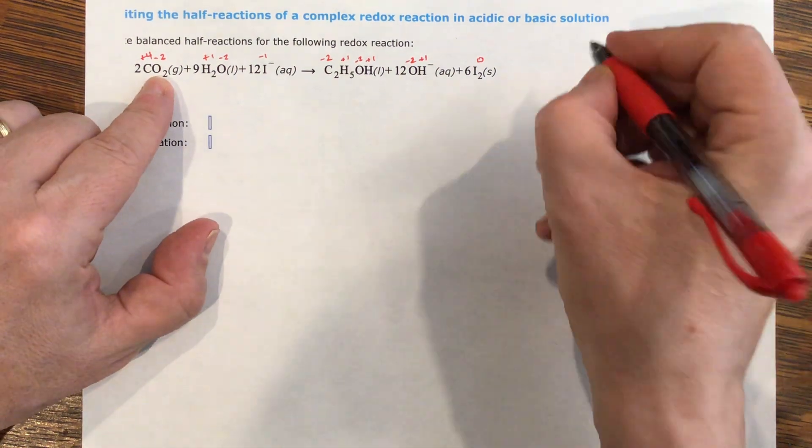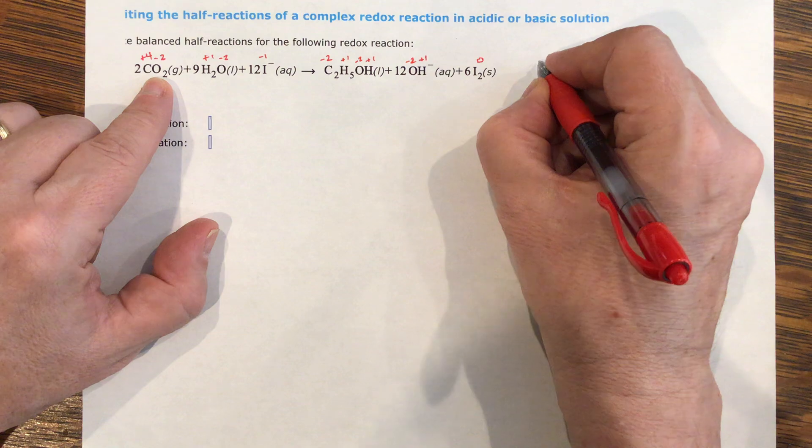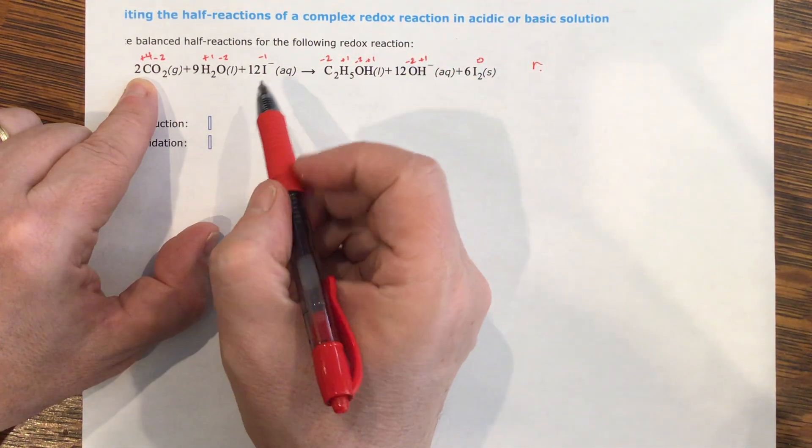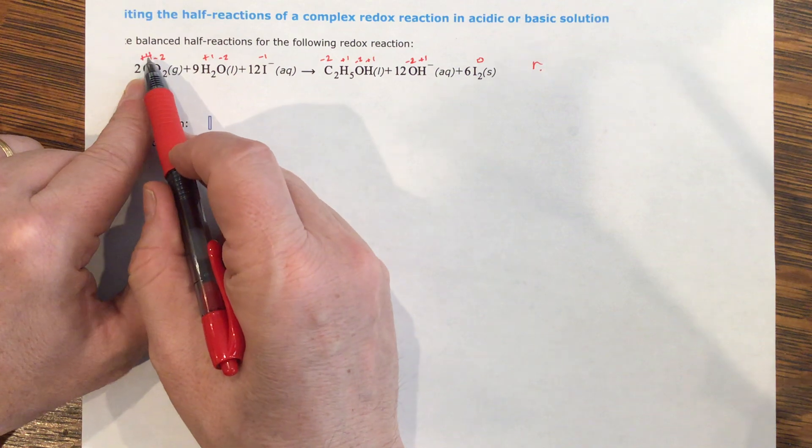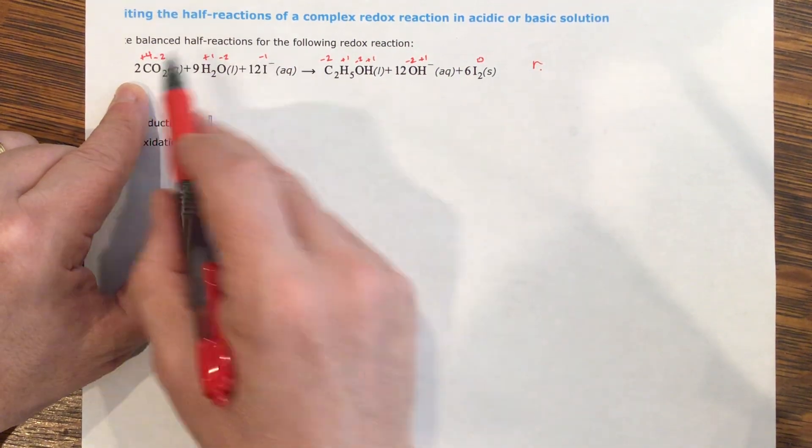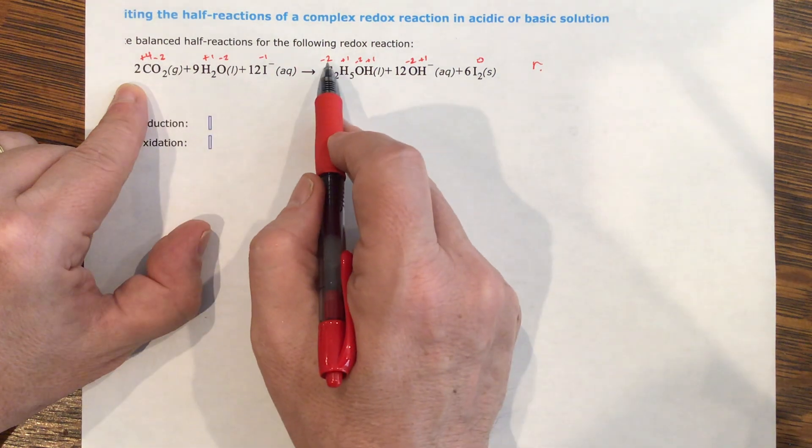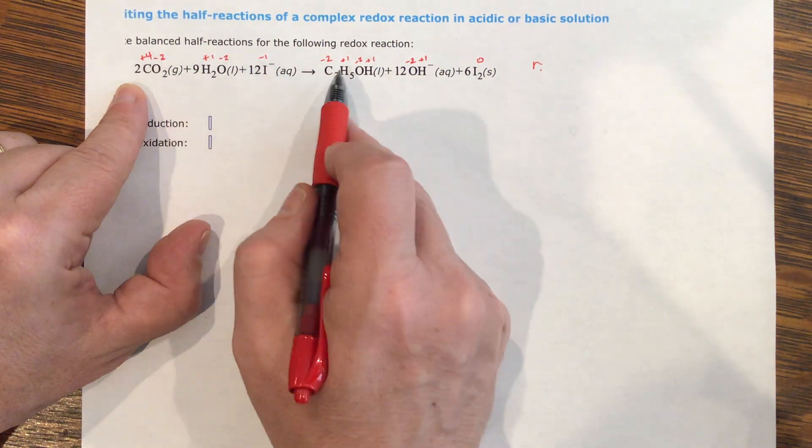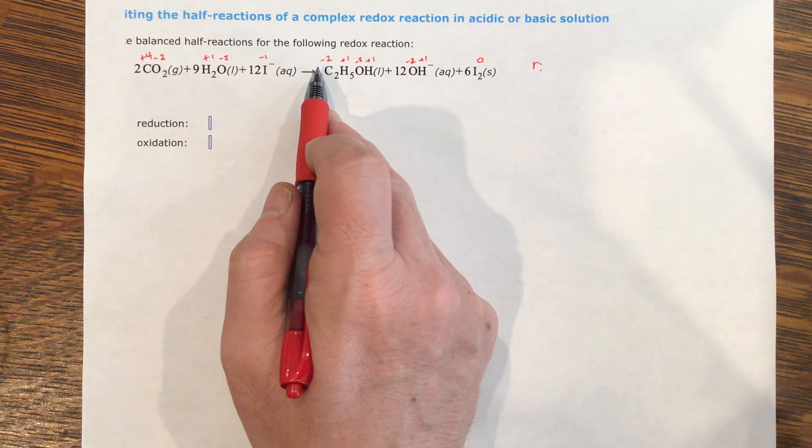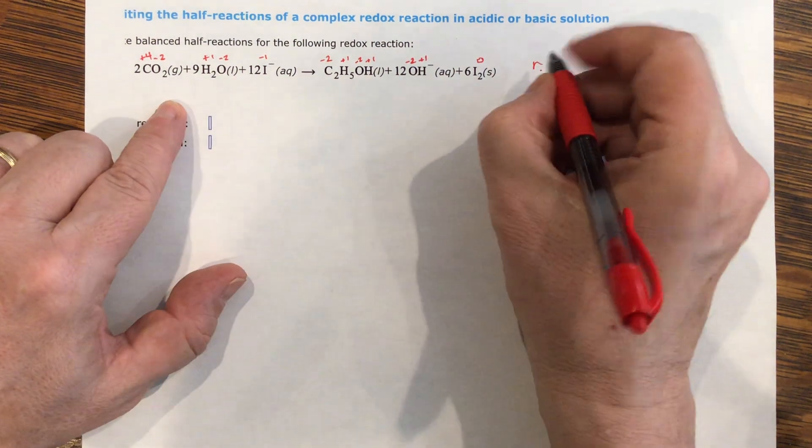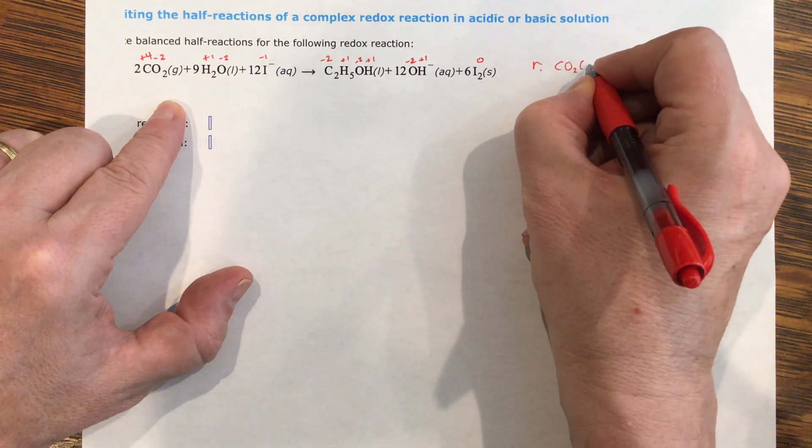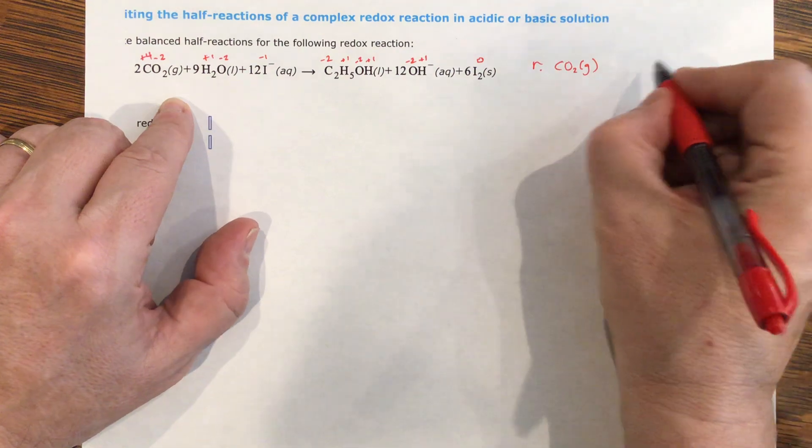So what went up and what went down? Let's look at reduction first. Reduction first is the ones going down. So I've got the four carbons on this side coming to a positive four on this side, but negative two on this side. So this one went down.